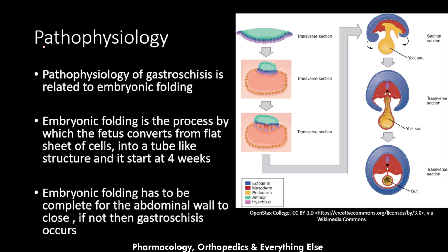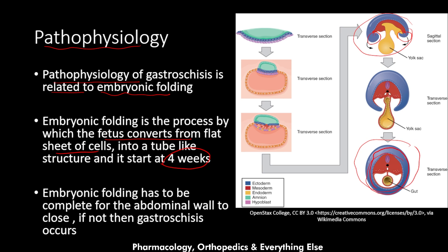Now let's talk about the pathophysiology of gastroschisis. It is related to embryonic folding, a process of fetal development in which the fetus converts from a flat sheet of cells into a tube-like structure — the lateral folds reach each other and form this tube-like structure. This process starts at 4 weeks and is completed at 11 weeks gestation. If this process fails, the endoderm structures that form the gut will herniate out through a hole in the abdominal wall. Embryonic folding must be complete for the abdominal wall to close; if not, gastroschisis occurs.